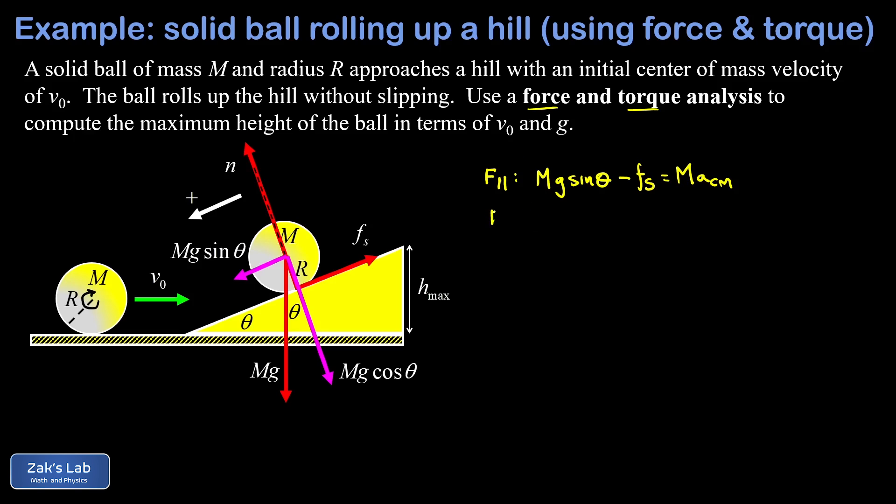Now if we look at the perpendicular direction just for completeness, we actually don't need this because we're not getting into any details about the friction force which would require details about the normal force. But what I can say in the perpendicular direction is that the normal force must be equal to Mg cosθ because the forces must balance perpendicular to the ramp. Again, we're not going to need that fact but I did it for completeness.